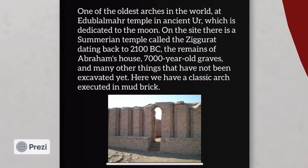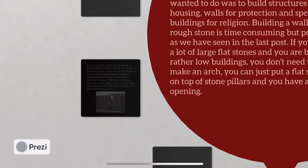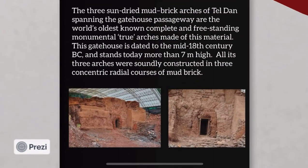A temple in ancient earth has one of the oldest arches in the world, with a classic arch executed in mud brick. The three sun-dried mud brick arches of Deldam, spanning the passageway, are the world's oldest non-complete and freestanding monumental true arches made of this material. All three arches were soundly constructed in three concentric radial courses of mud brick.